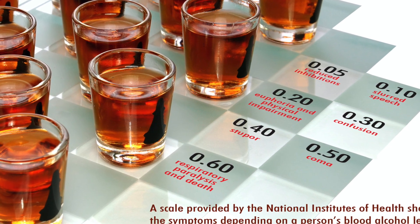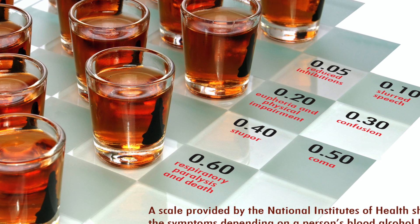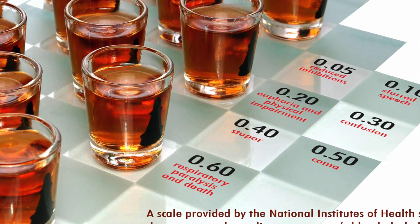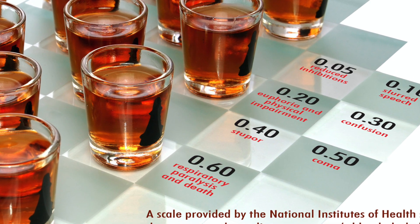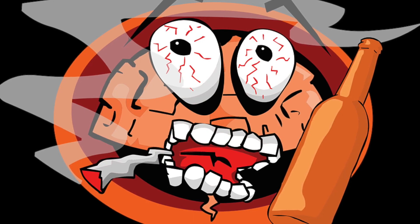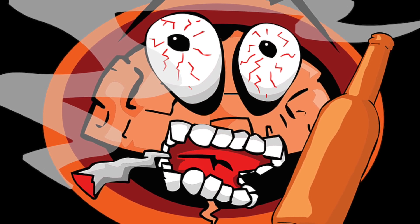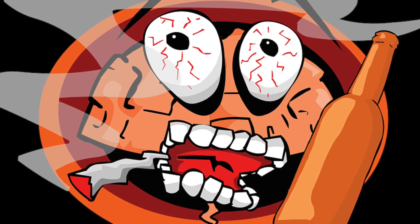People can become easily addicted to alcohol, and long-term damage can be the result, including a possibility of death. Alcohol is a carcinogen, meaning that heavy drinkers are at increased risk of developing liver cancer. Long-term heavy drinking can also cause damage to the brain, and some alcoholics lose structure in their brain, meaning that it cannot function properly.